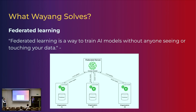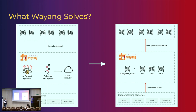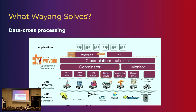Based on the federated learning idea, you collect data from a local model without touching the data, process it using other platforms, send it back locally, and aggregate all the models. This can be applied easily to hospitals or health researchers where we don't want to touch the data because of privacy concerns — just sharing the model and collecting training results. Wayang also acts as a coordinator between other data platforms and data sources through that abstraction layer.